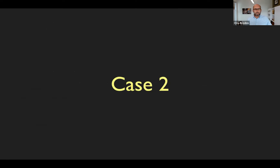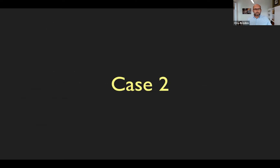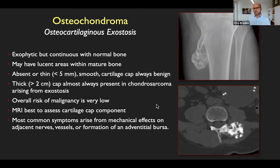Q: If you see an osteochondroma incidentally and you're the first one to see it, do you get an MRI to evaluate it? A: You don't necessarily need it, but you can try to look for lucency on the end of it on CT — if there's any tissue different from muscle. In general, if you detect something like this and it's substantial in size, MRI is the next best test to investigate whether or not it has a cartilage cap. Another factor: patients with multiple hereditary exostoses are much more likely to have malignancy than patients with an incidental solitary exostosis, and that might influence you as well.